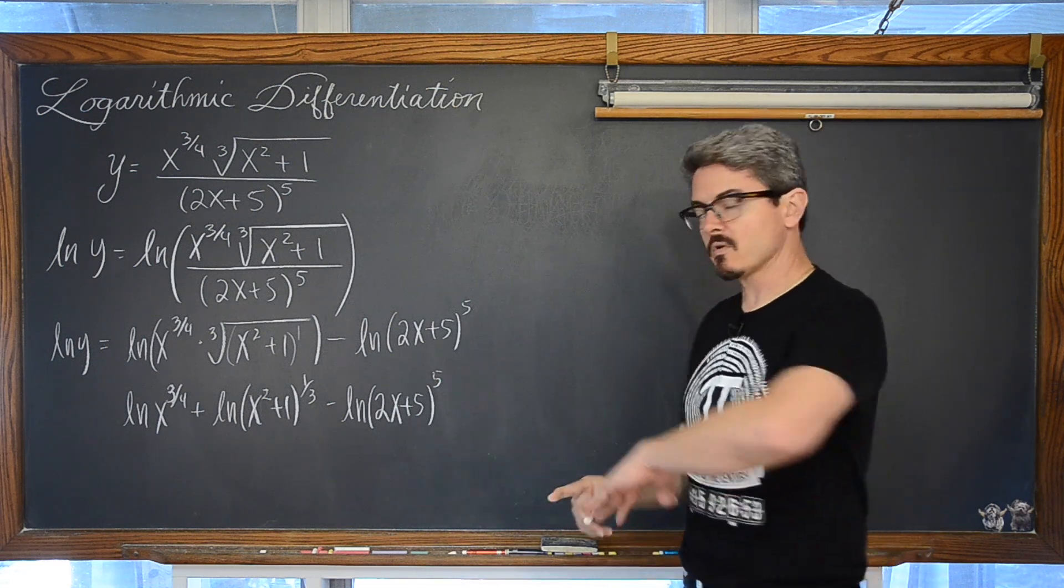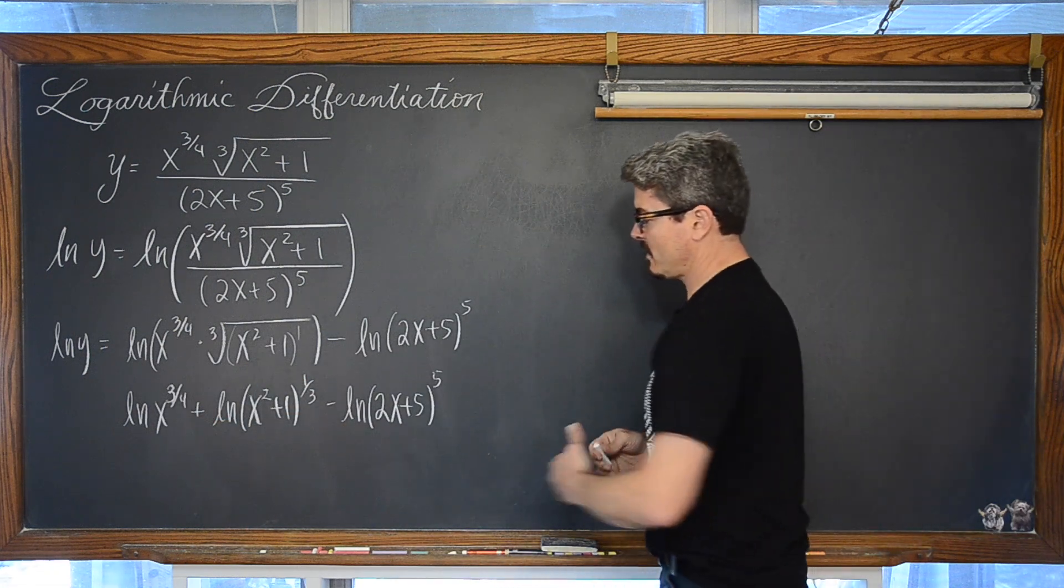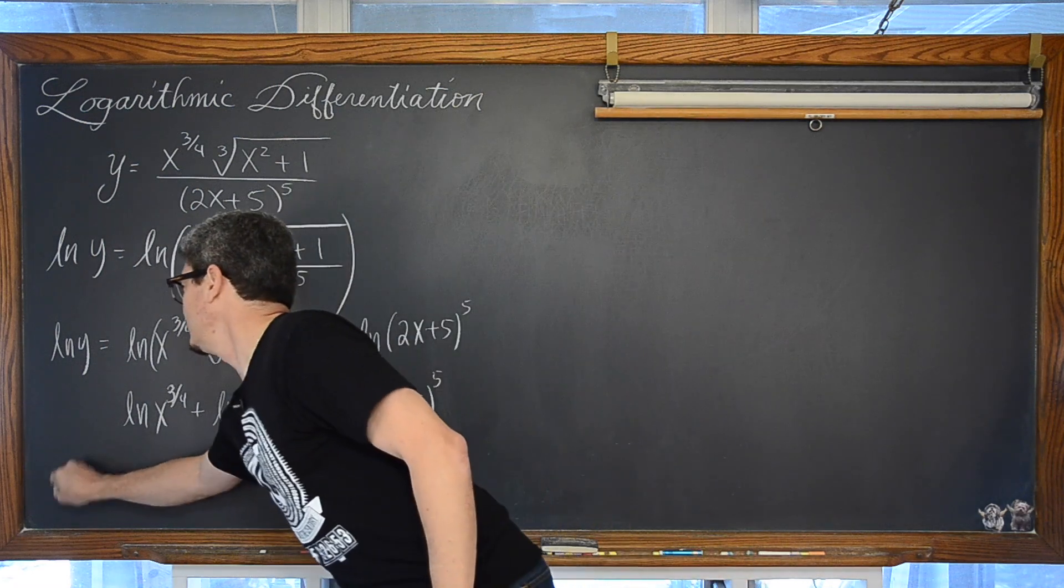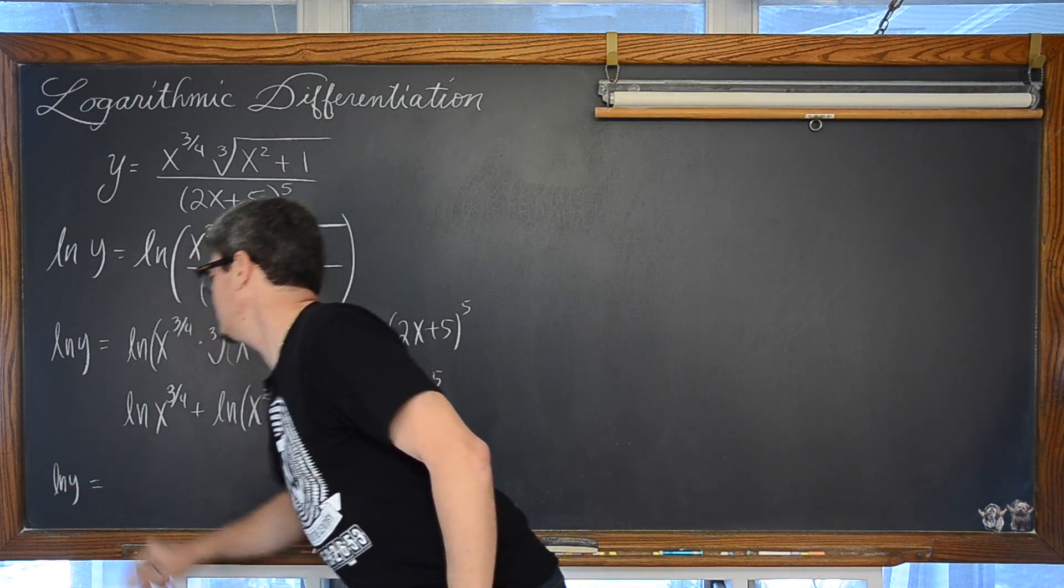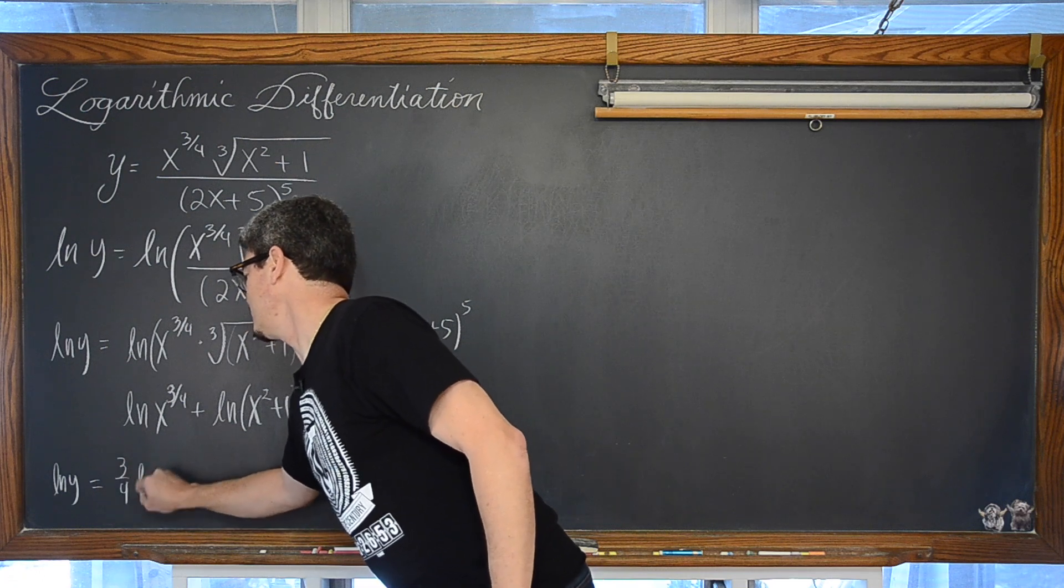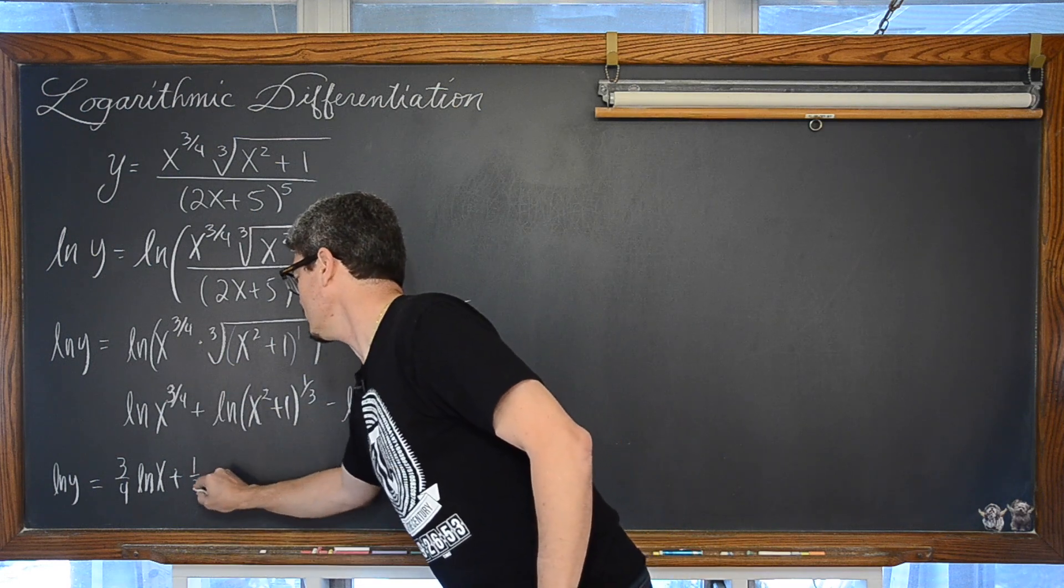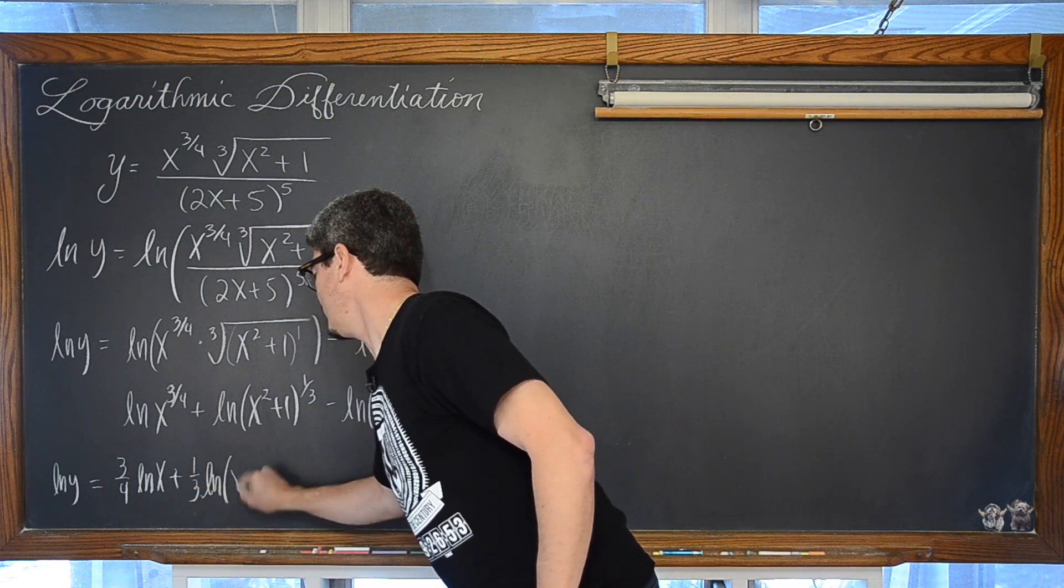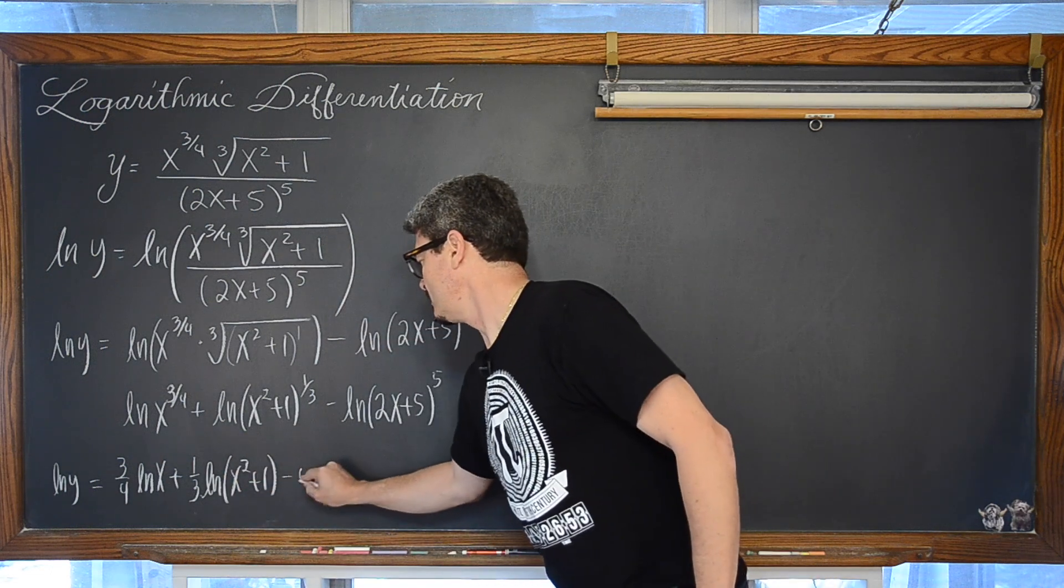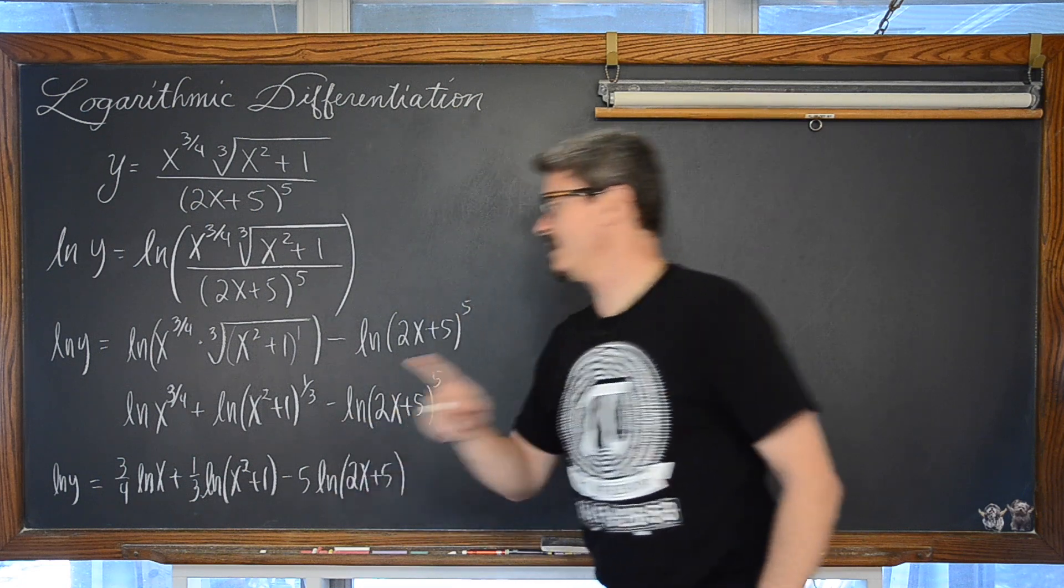So now that expression is going to be raised to the 1/3 power, writing that radical as our fractional exponent, minus the natural log of 2x plus 5 raised to the fifth power. Well now we are going to go ahead and just use the power property for the expansion of natural logarithms and bring all these powers out front. So we have the natural log of y equals 3/4 times the natural log of x plus, bringing this power down, 1/3, 1/3, times the natural log of x squared plus 1.